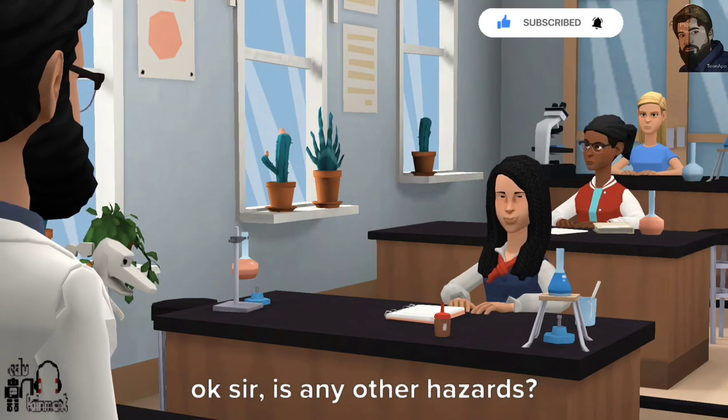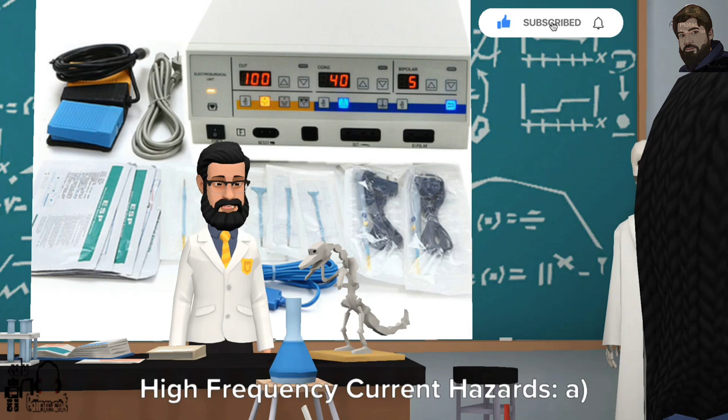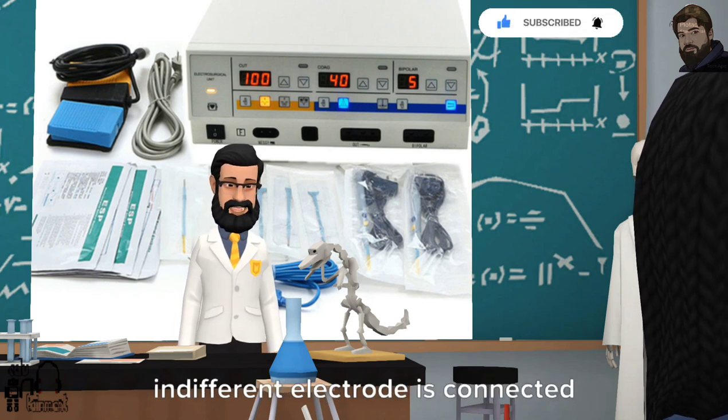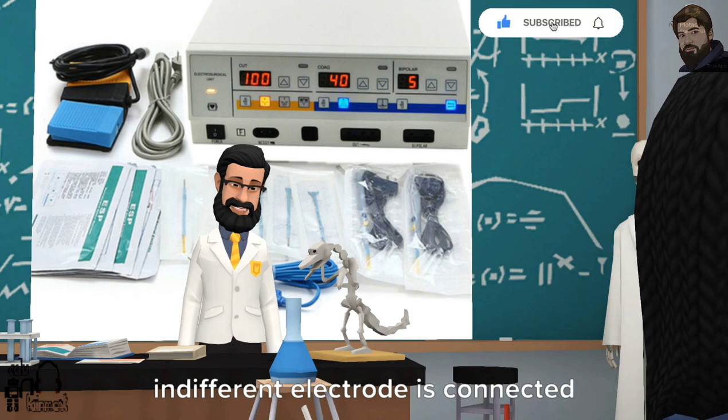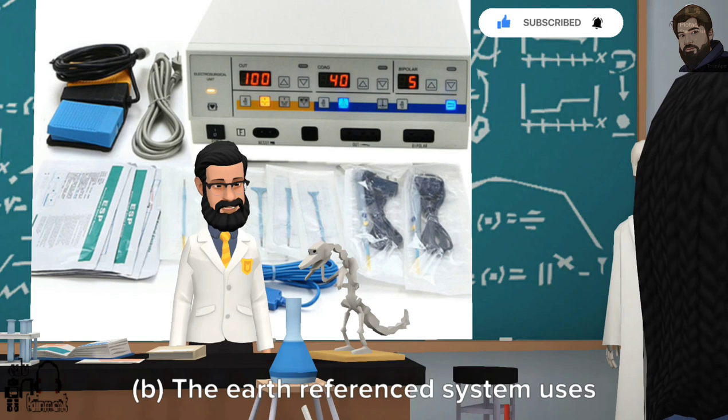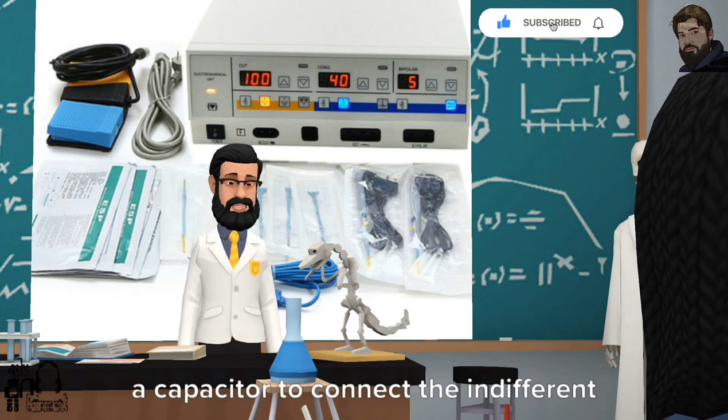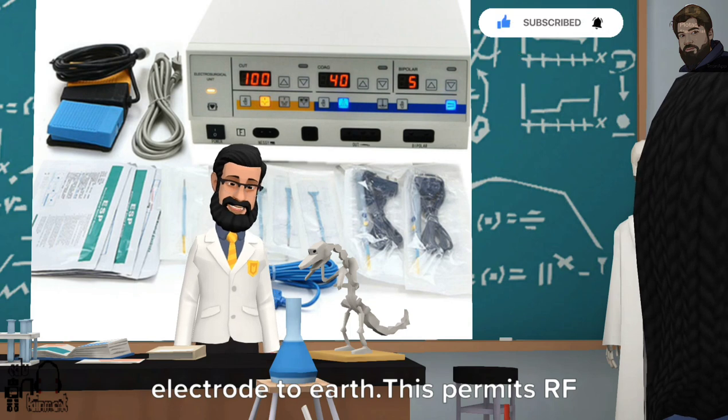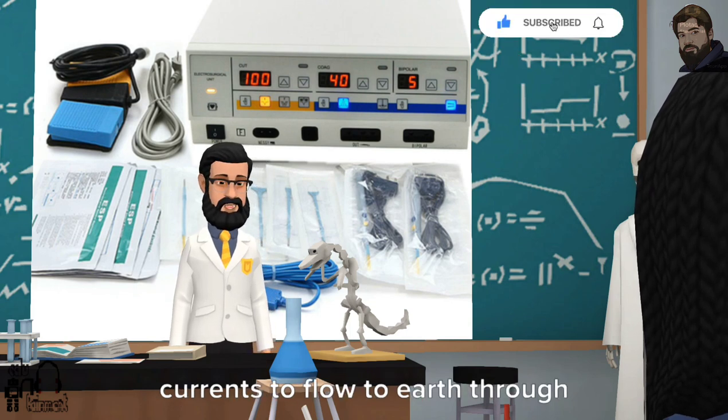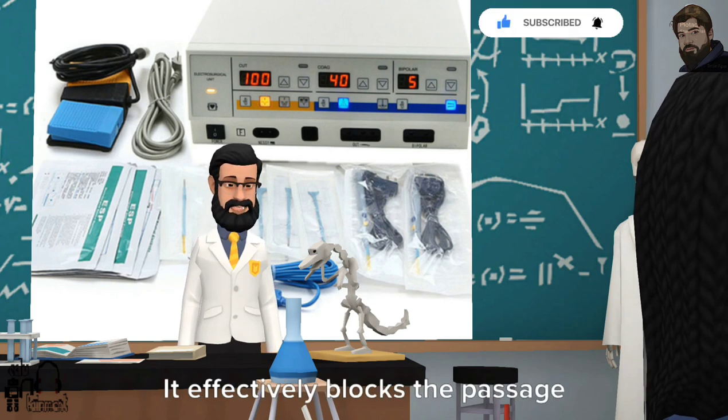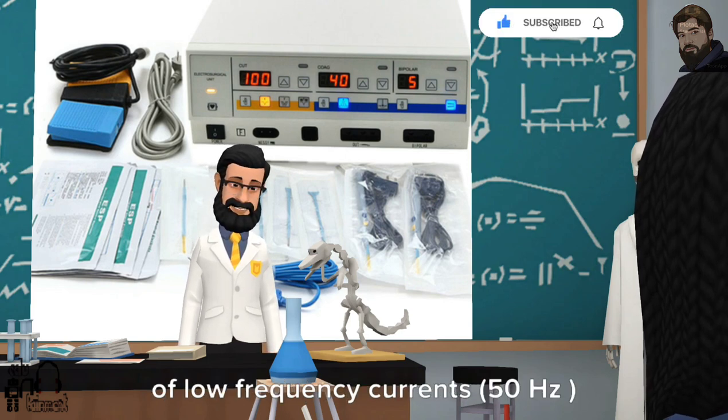Is there any other hazards? High frequency current hazards. In the earthed output system, the indifferent electrode is connected conductively to protective earth. The earth referenced system uses a capacitor to connect the indifferent electrode to earth. This permits RF currents to flow to earth through the diathermy machine. It effectively blocks the passage of low frequency currents (50 Hz).